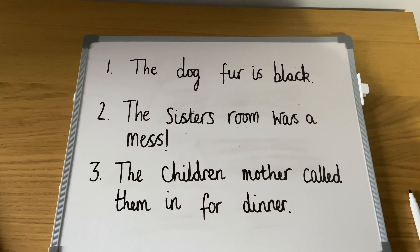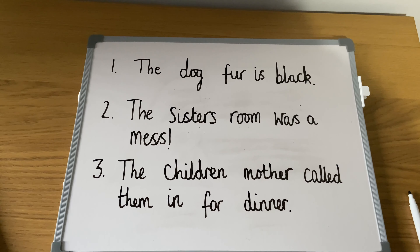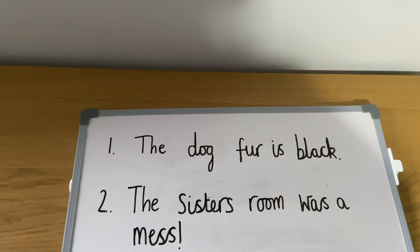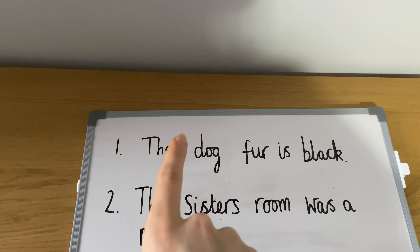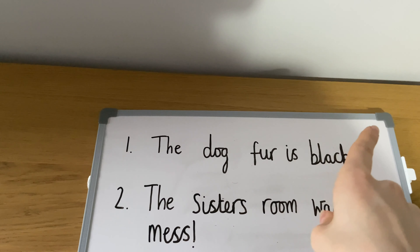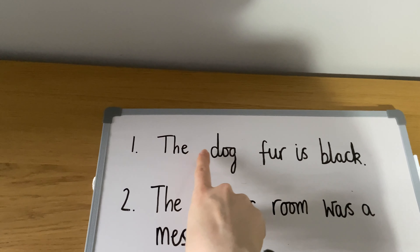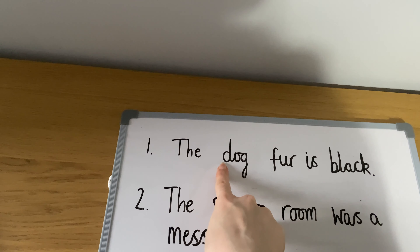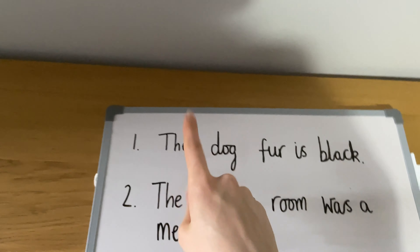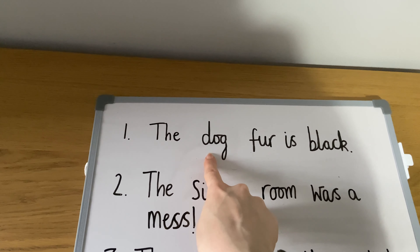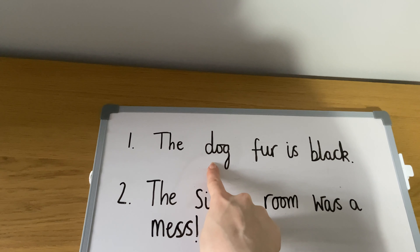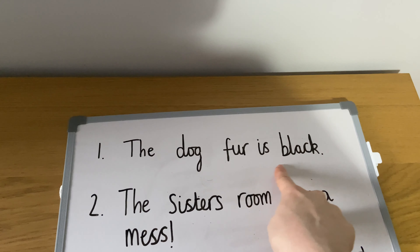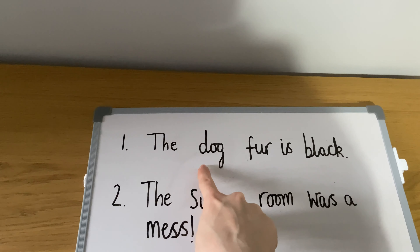Apostrophes can be used to show that one thing belongs or is connected to something else. We can use them for different things. So our first example is: the dog fur is black. The word 'dog' is a singular noun, which means there is only one dog that the sentence is talking about.